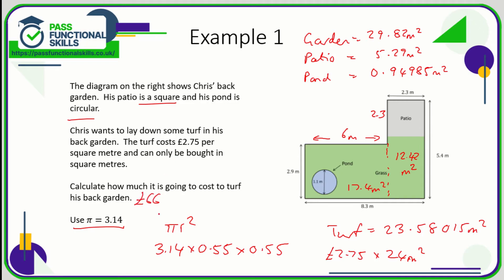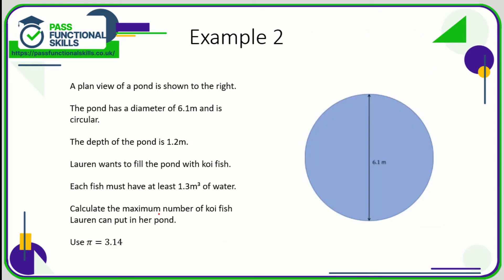Let's take a look at another example. So this one is about volume, because we've been told that every fish needs 1.3 cubic meters. So to work out the volume of water in the pond is going to be the area of this circle multiplied by the depth of 1.2.